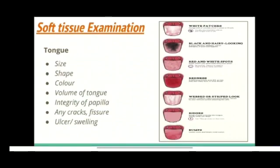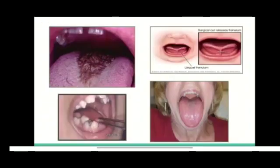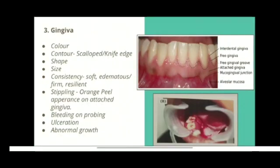Now let's look at soft tissue examination. First we examine the tongue — its size, shape, color, volume, integrity of papilla, any cracks or fissures, and if any ulcers or swelling are present. This is the pictorial representation of a few anomalies of the tongue. For gingiva, we look at color, contour, shape and size, consistency, whether stippling is present or absent, bleeding on probing, and any ulceration or abnormal growth.